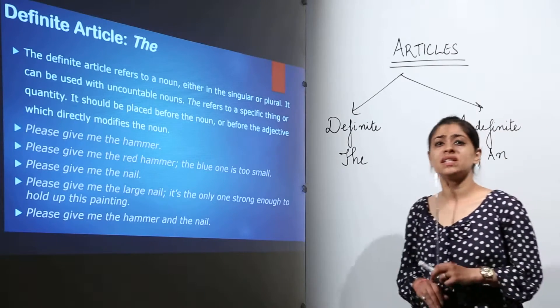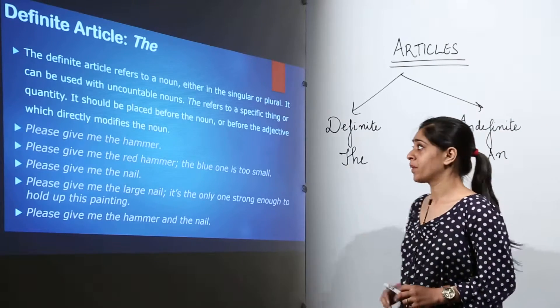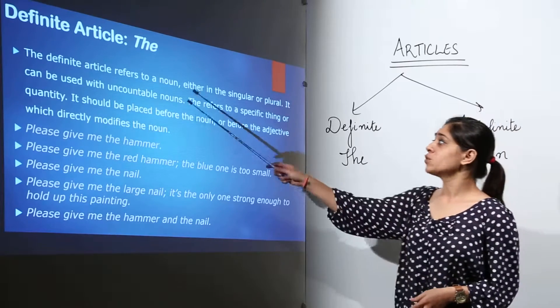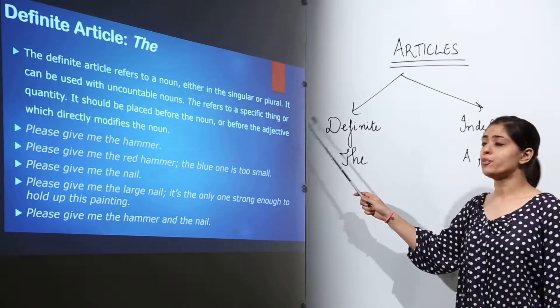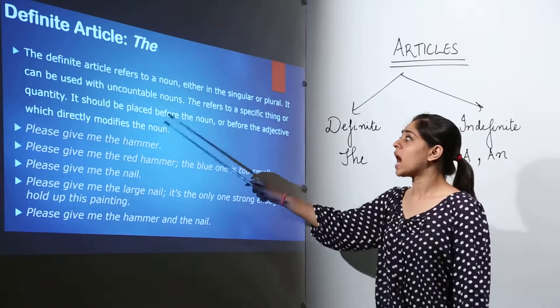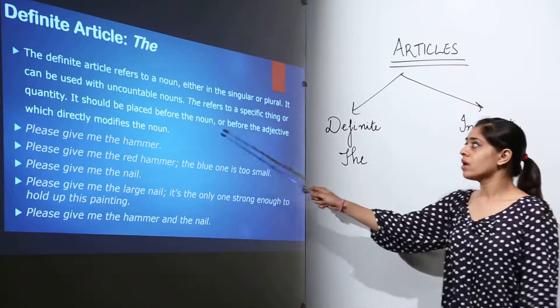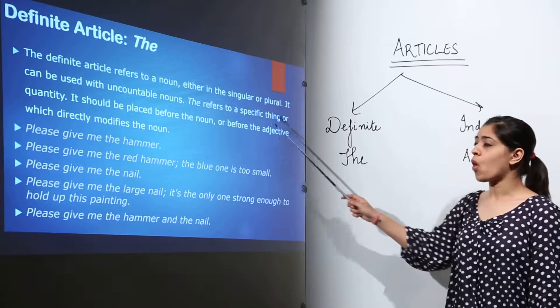Now we're going to talk about the definite article the. The definite article refers to a noun either in the singular or plural. It can be used with uncountable nouns. The refers to a specific thing or quantity.